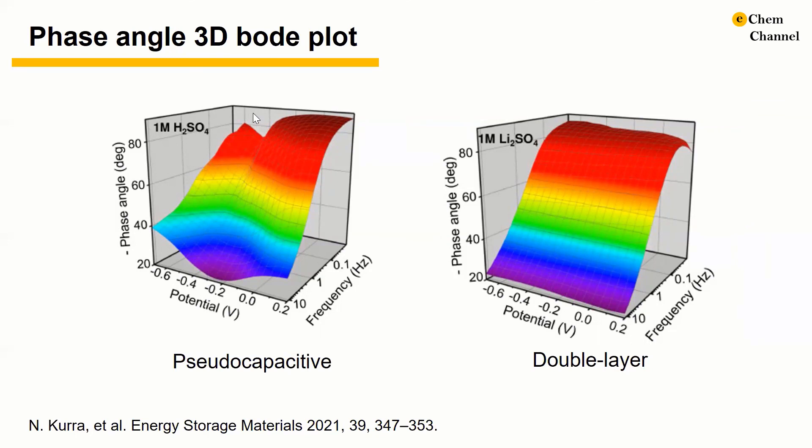The MXene in sulfuric acid electrolyte shows potential dependent phase angle behavior at low frequencies, signifying combined capacitive and redox behaviors within the tested voltage window.